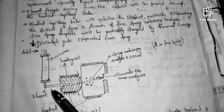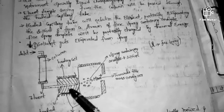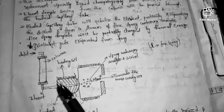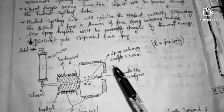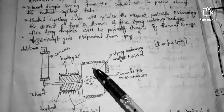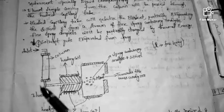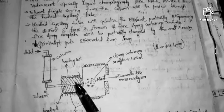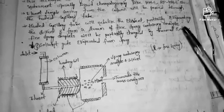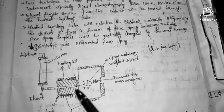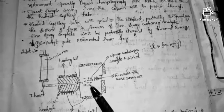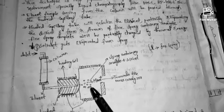The heated capillary tube will nebulize the eluent. Nebulization means the conversion of a liquid into a fine spray. So the eluent from the column is nebulized, partially evaporating the solvent and forming a stream of fine spray droplets.